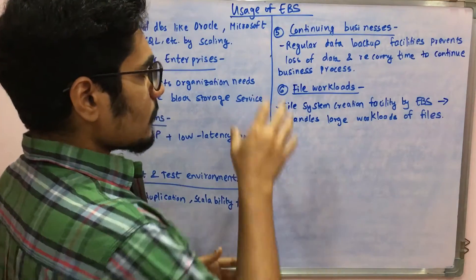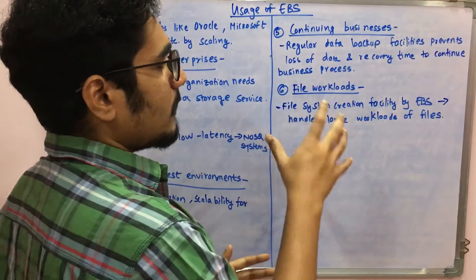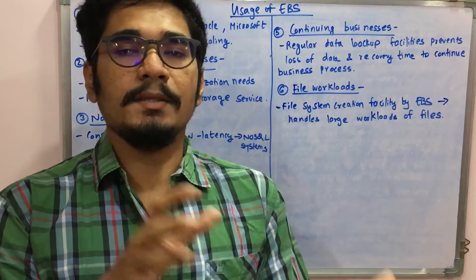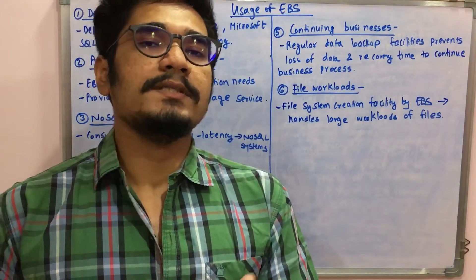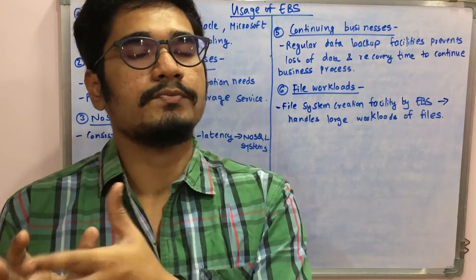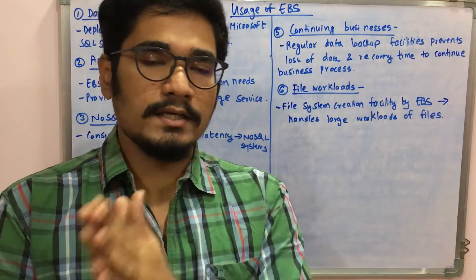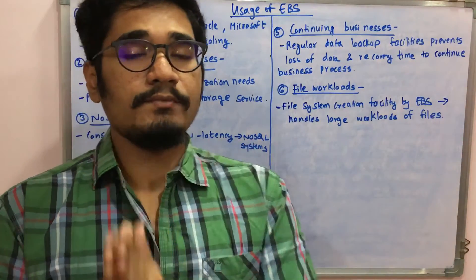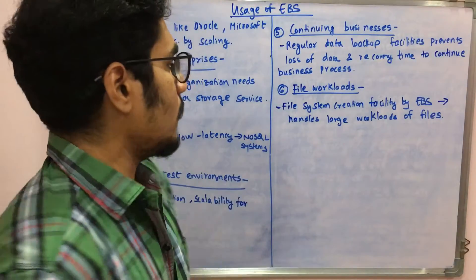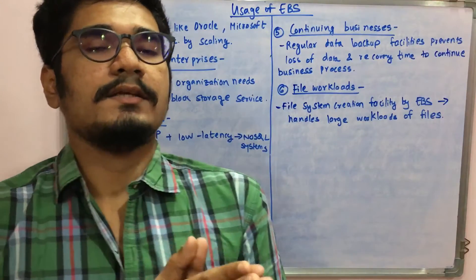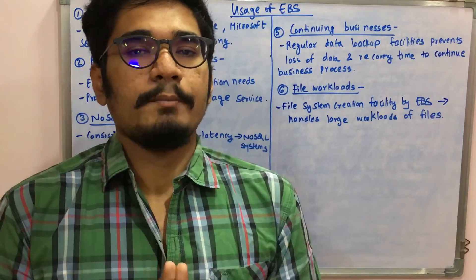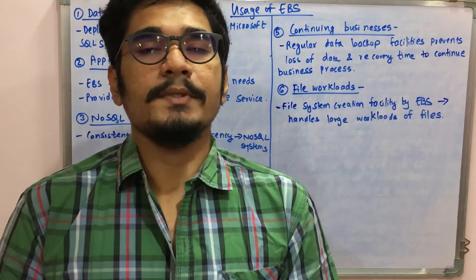Sixth, EBS supports file workloads through its file system creation facility. The different EBS types — general purpose, provisioned, and magnetic — are used for different kinds of applications, such as highly CPU-intensive or medium-sized workloads, handling large volumes of file data efficiently.